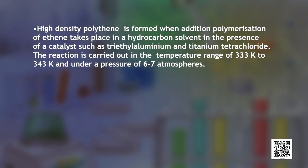High density polythene is formed when addition polymerization of ethene takes place in a hydrocarbon solvent in the presence of a catalyst such as triethyl aluminum and titanium tetrachloride. The reaction is carried out in the temperature range of 333 to 343 Kelvin and under a pressure of 6 to 7 atmospheres. You can see how the conditions determine the type of polythene obtained.